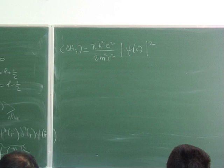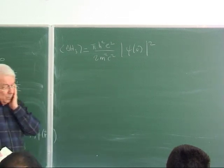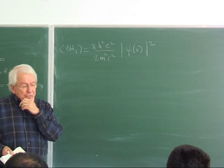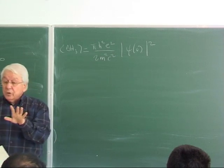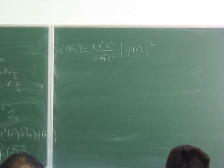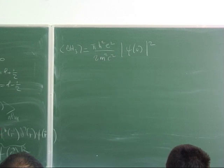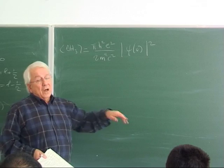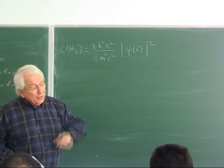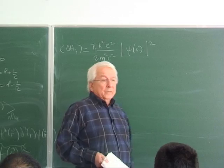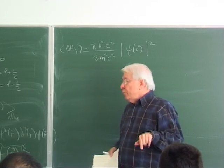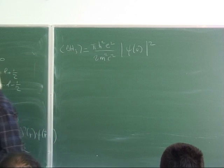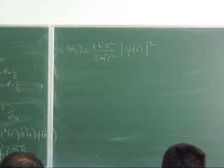This brings us to an important question: which wave functions do not vanish at the origin? We are talking about hydrogen wave functions specifically. The Coulomb wave function separates as psi_NLm = R_NL(r) times Y_Lm(theta, phi). For this discussion it is the radial part R_NL that matters. We need to determine which radial functions are nonzero at the origin.